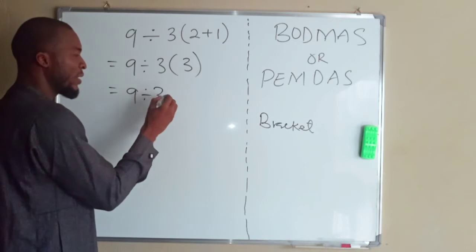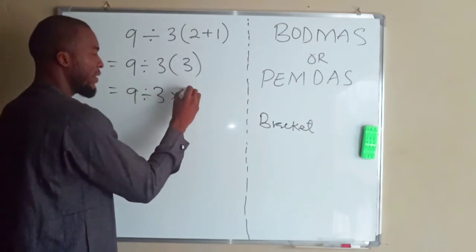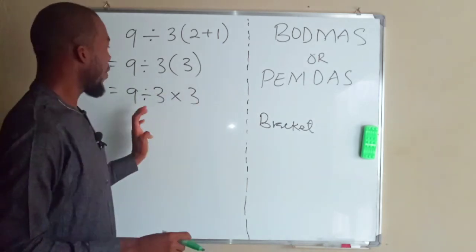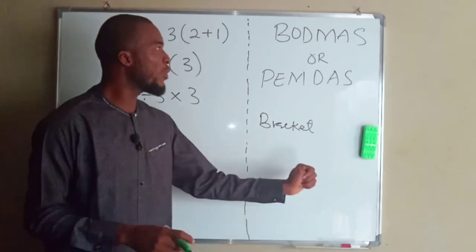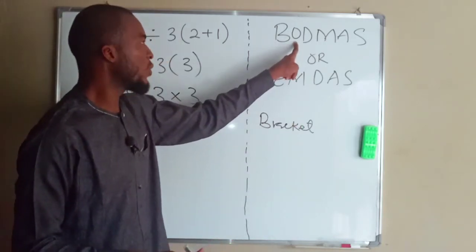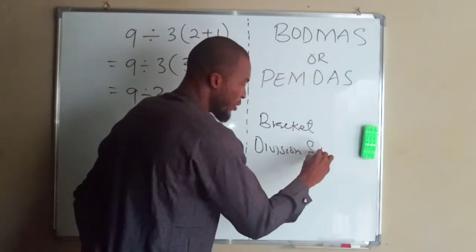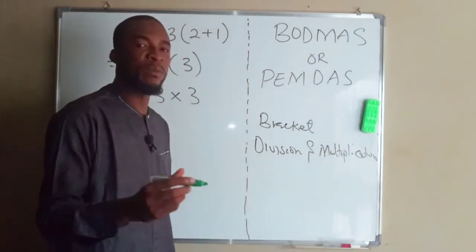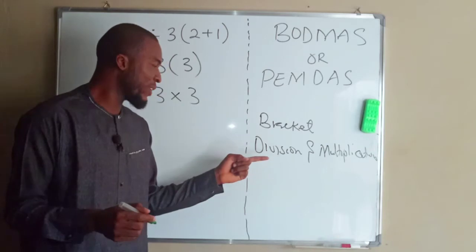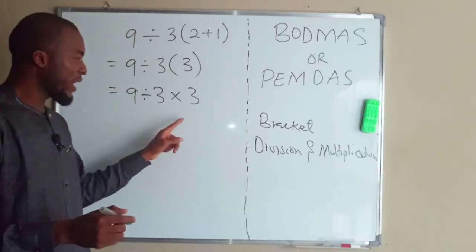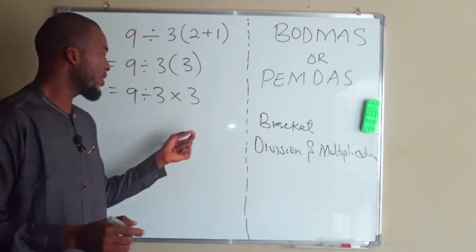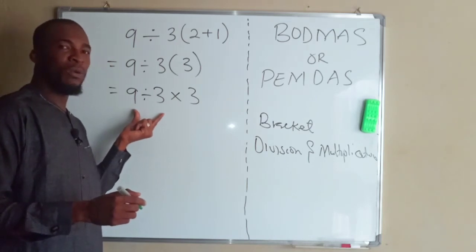Now we are done with simplification. We move to order - we don't have order. Division and multiplication are done simultaneously starting from left to right. We have division before multiplication, therefore we are going to do division first.